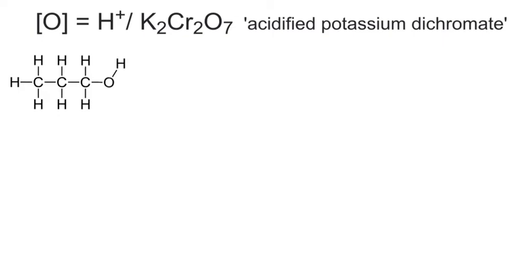Hi everyone and welcome back to ASFC Chemistry. What I'm going to take you through now is oxidising primary alcohols. The primary alcohol I'm going to use for this — different from the ones in the notes at Ashton Sixth Form College — is going to be propan-1-ol.